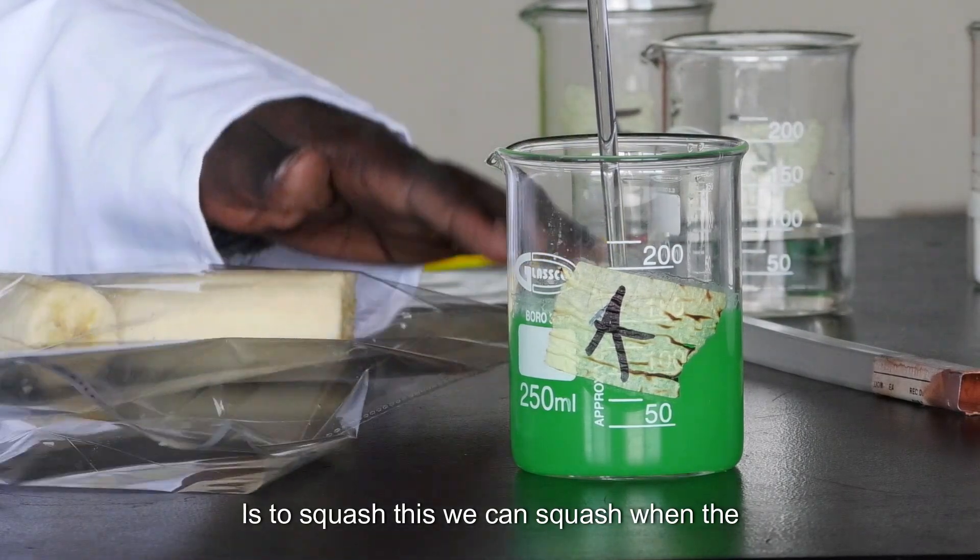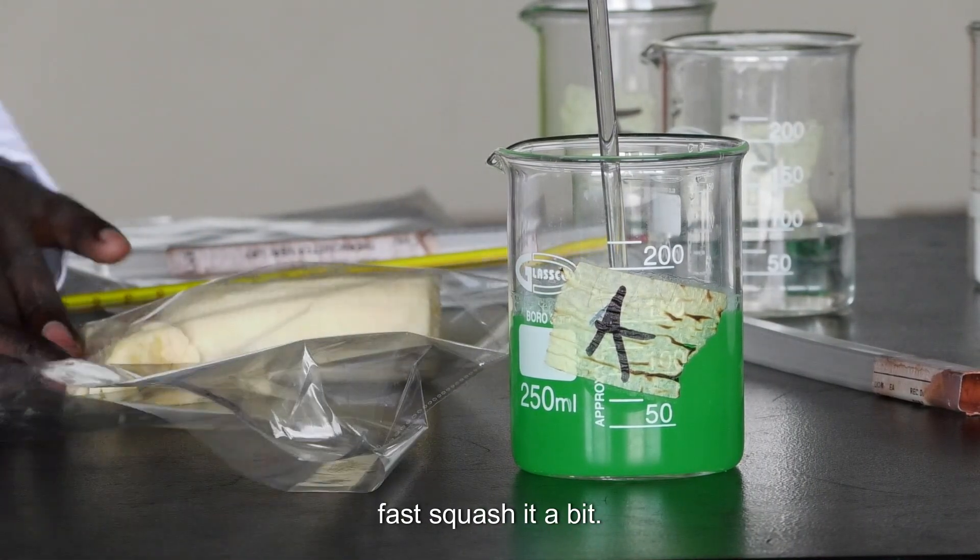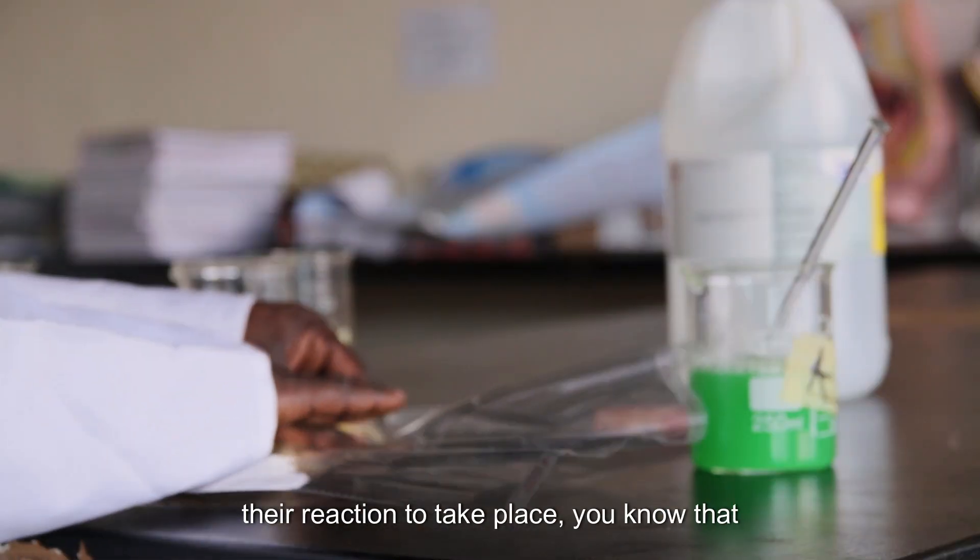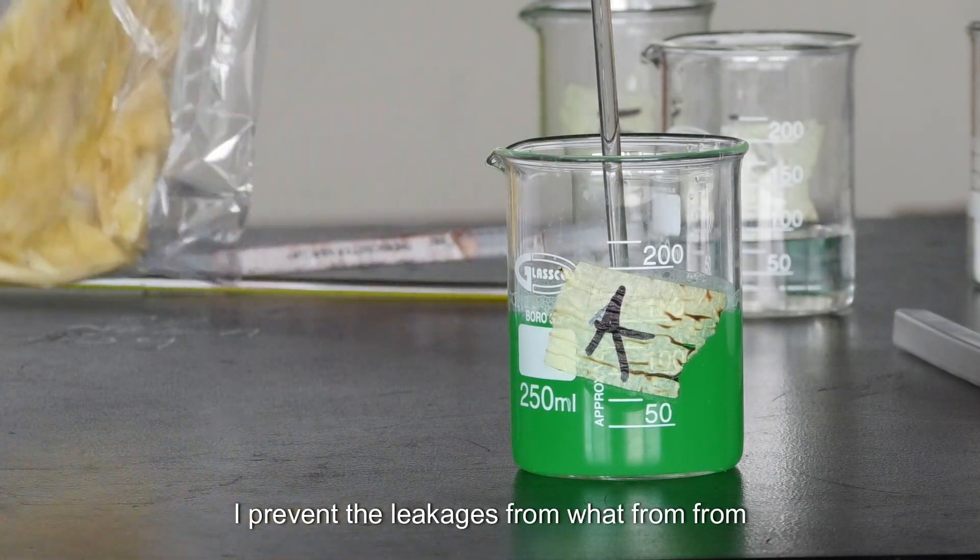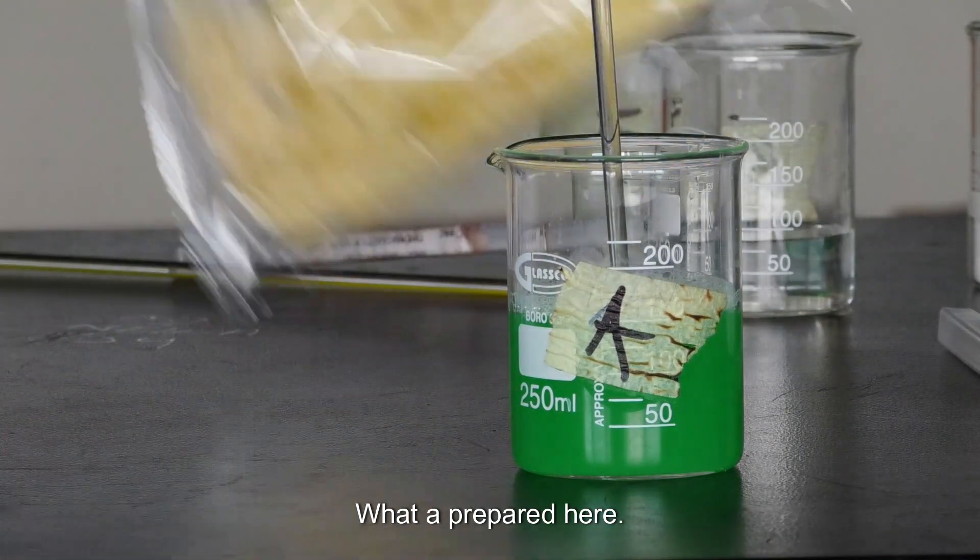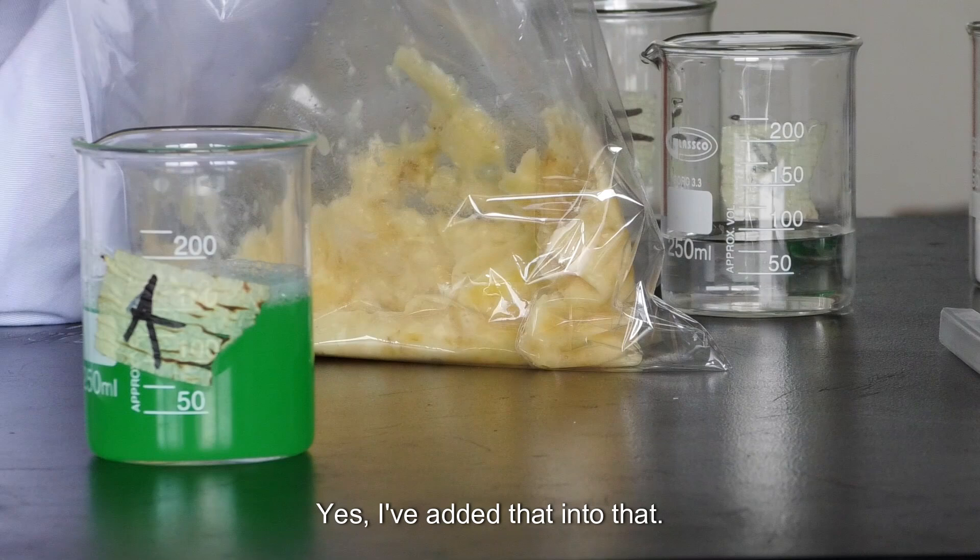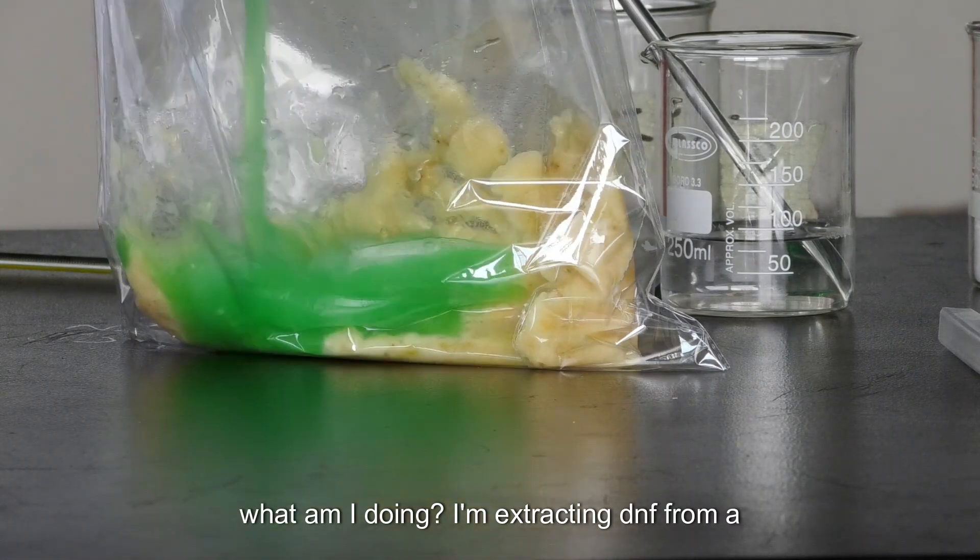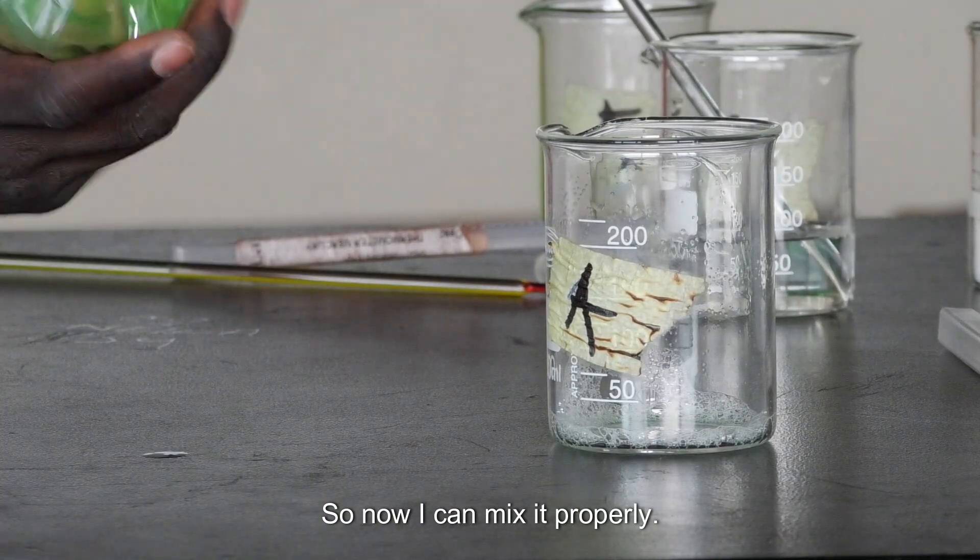And now what we need to do is to squash this. We can squash when the liquid is in there already. Or we can just first squash it a bit. Why do we squash it? Basically it's not a big deal. Just to increase the surface area for the reaction to take place. So I'm just doing this so that I prevent the leakages from happening. So now after that, I need to add what I've prepared here. This mixture into this. I pour. What am I doing? I'm extracting DNA from a banana.